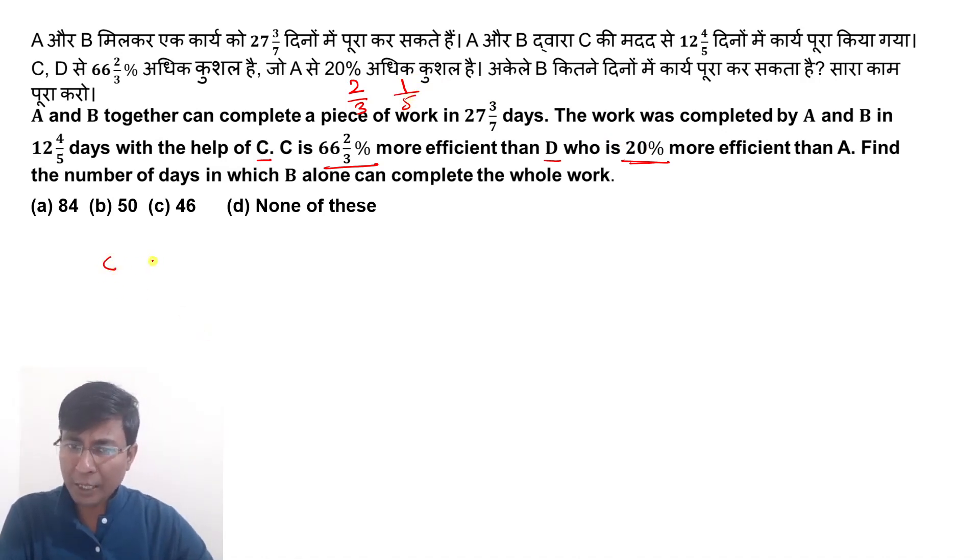So you have given C, you have given D, and you have given A efficiency. Now the question asks for C's work rate. The efficiency relation is given: A to C, D, A. Since B's efficiency is not given, assume the efficiency. So you have all the individual efficiency.